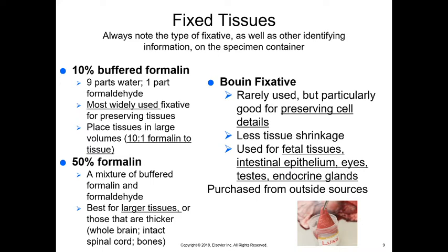Large tissues in small containers won't have enough formalin, so the lab may need to transfer them to a bigger container for proper fixation. The second fixative is 50% formalin, best for larger or thicker tissues such as whole brain, intact spinal cord, and bones. The third is Bouin's fixative, which is rarely used but particularly good for preserving cell detail with less tissue shrinkage — used for fetal tissues, intestinal epithelium, eyes, testes, and endocrine glands.